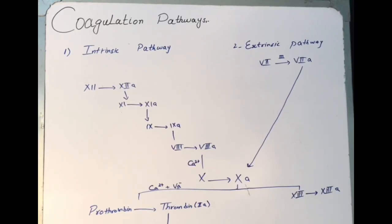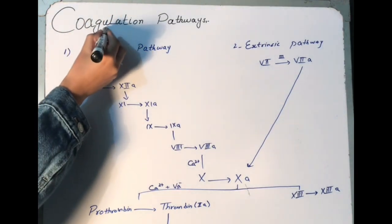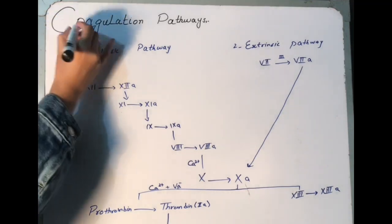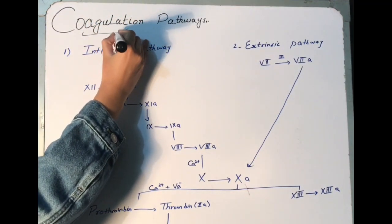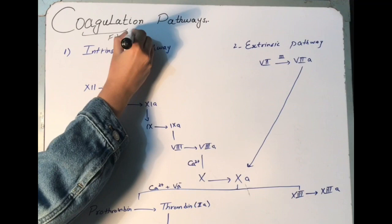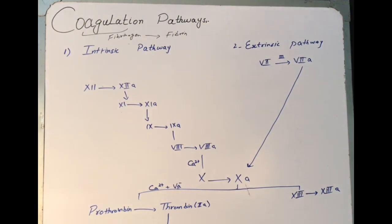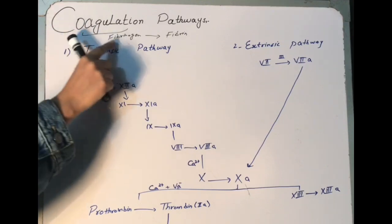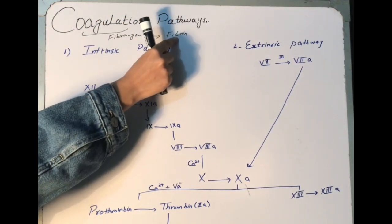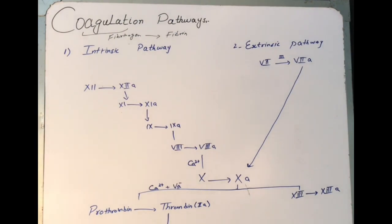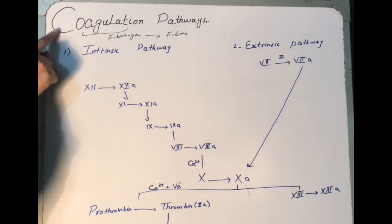Today we are going to study the coagulation pathway. First of all, we have to know what is meant by the word coagulation. Coagulation means the process of conversion of soluble fibrinogen into insoluble fibrin. Fibrinogen is present in our blood in soluble form and we have to convert it into insoluble fibrin, which will help in formation of a secondary platelet plug.